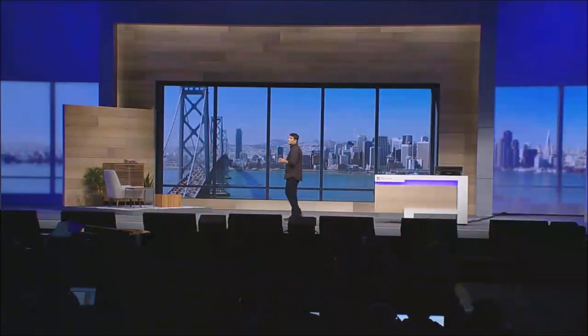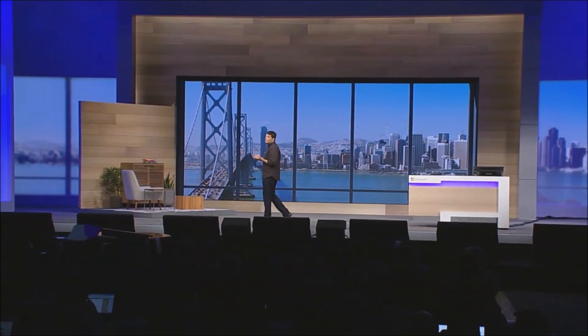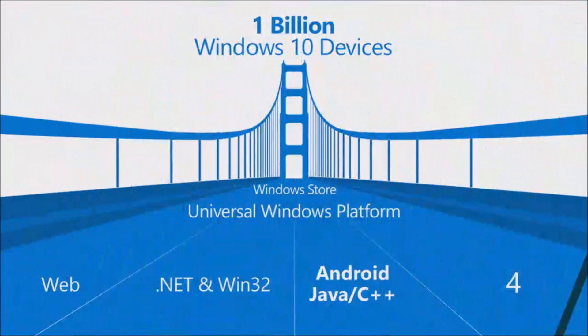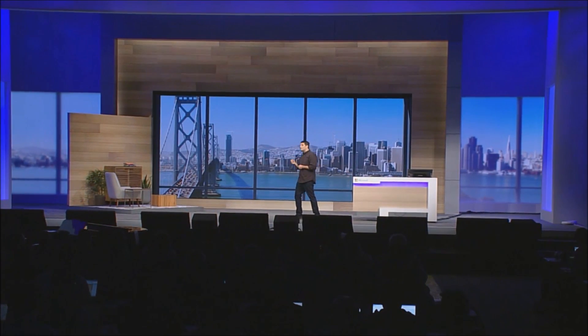The third technology being announced today will enable developers to reuse nearly all of the Java and C++ code from an Android phone app to create apps for phones running Windows 10. To make this possible, Windows phones will include an Android subsystem where an app can be written that takes advantage of the Android code, but also the extensions you would write in the Windows platform to really delight the Windows user.